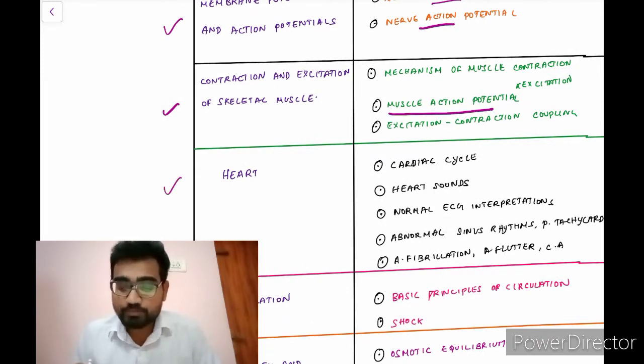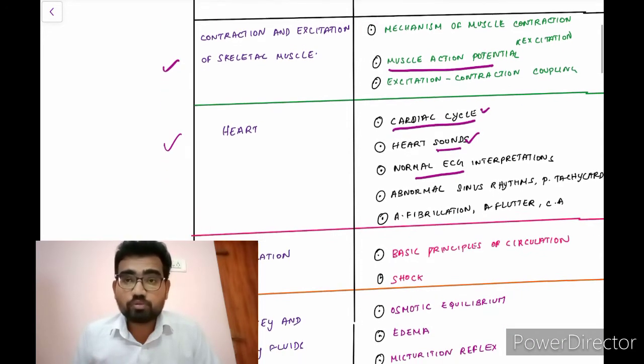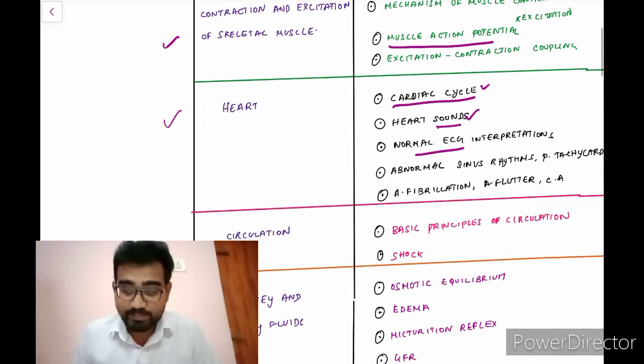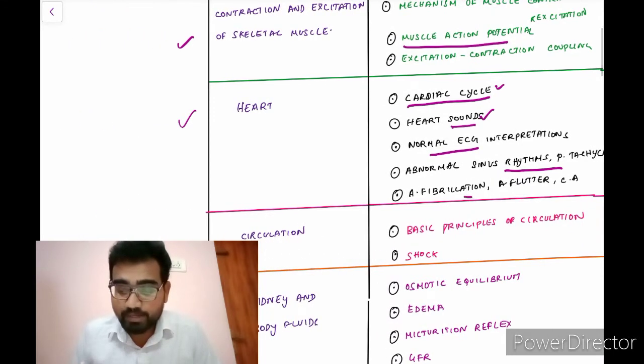And the heart, you should definitely know about the cardiac cycle. And how much second it takes for systole and diastole and the heart sounds. So if you properly know the heart sounds, it will be very easy for you to correlate with the abnormal heart sounds, the cardiac moments. And the normal ECG, how to go about, how to interpret a normal ECG. And abnormal sinus rhythms and atrial fibrillation, atrial flutter. These topics will be covered in general medicine, but you just get an idea of what is atrial fibrillation or atrial flutter.